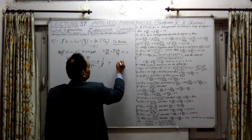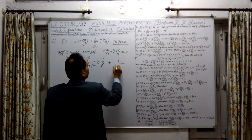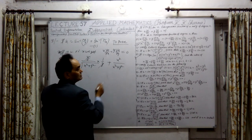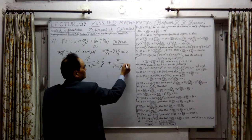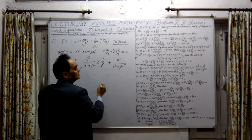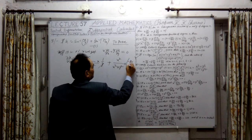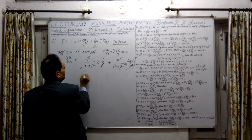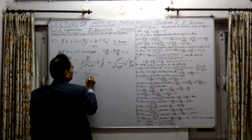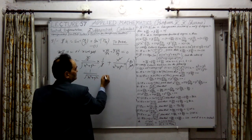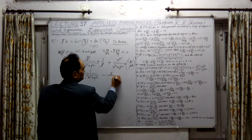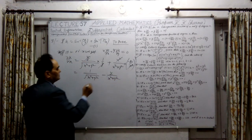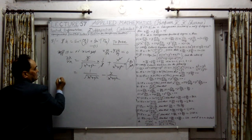Now tan inverse x is differentiated — this is 1 upon x square plus y square, and in the numerator we will get x square here. y upon x is again differentiated, it will be minus y upon x square, and x square cancels out. We get here 1 upon under root x square plus y square, minus y upon x square plus y square. This is what we have obtained here.